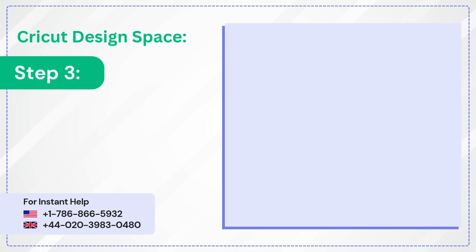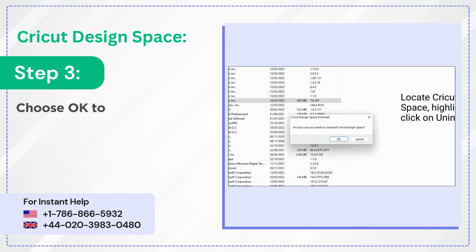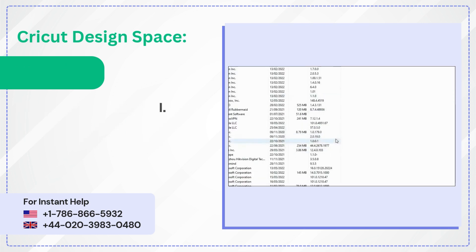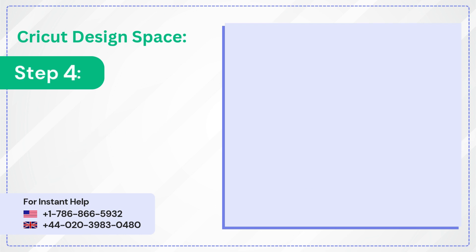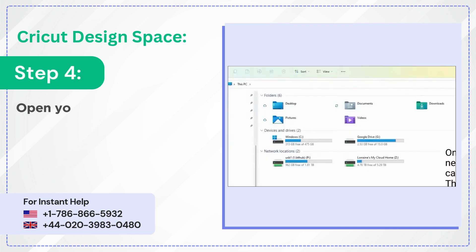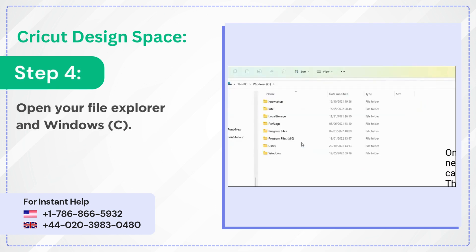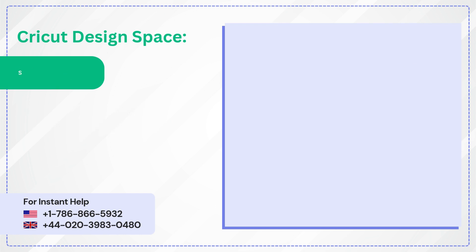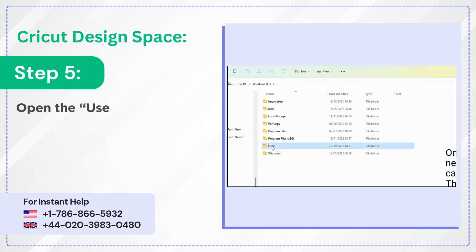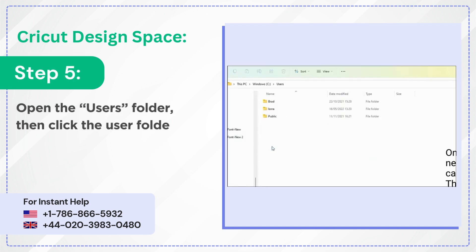Step 3: Choose OK to Uninstall. Step 4: Open your File Explorer and go to Windows C. Step 5: Open the Users folder, then click the user folder with your login name.